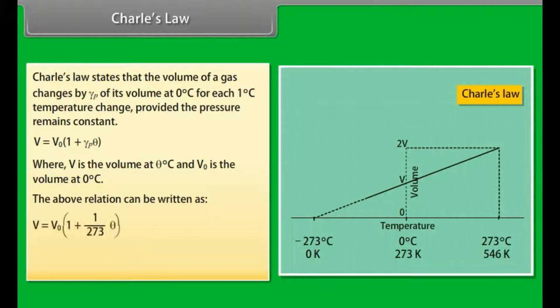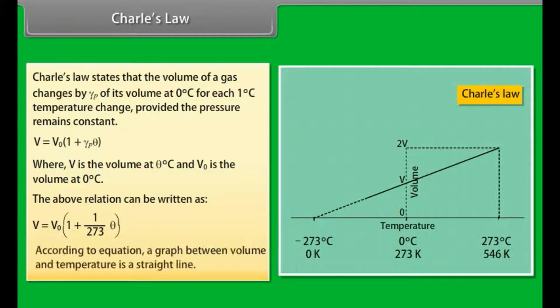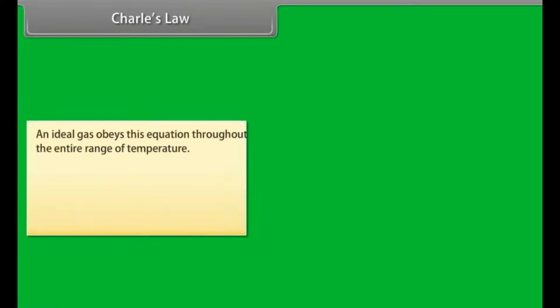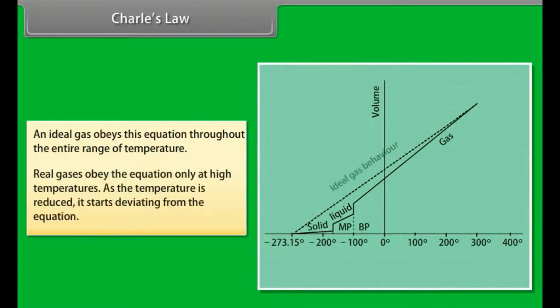According to the equation, a graph between volume and temperature is a straight line. An ideal gas obeys this equation throughout the entire range of temperature. Real gases obey the equation only at high temperatures. As the temperature is reduced, it starts deviating from the equation.